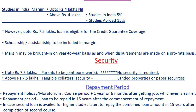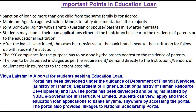Repayment: moratorium is course period plus one year or six months after getting a job, whichever is earlier. Loan to be repaid in 15 years after commencement of repayment. If a second loan is availed for higher studies, the combined loan amount is to be repaid in 15 years after completion of the second course. Sanction of loan to more than one child from the same family is permitted. There is no minimum age restriction; minors must ratify documentation after attaining majority.